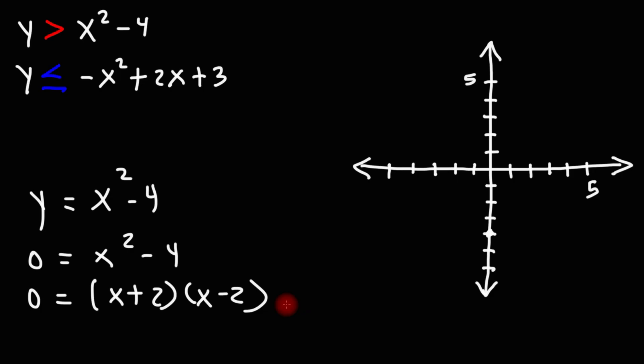Solving for x, we can set each factor equal to 0 using the 0 product property. And we'll get that x is equal to positive 2 and x is equal to negative 2. So those are the intercepts for that graph.